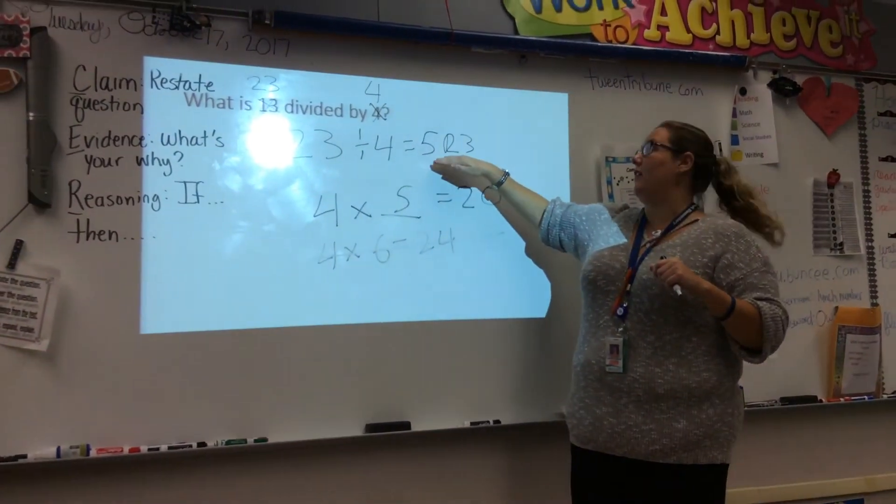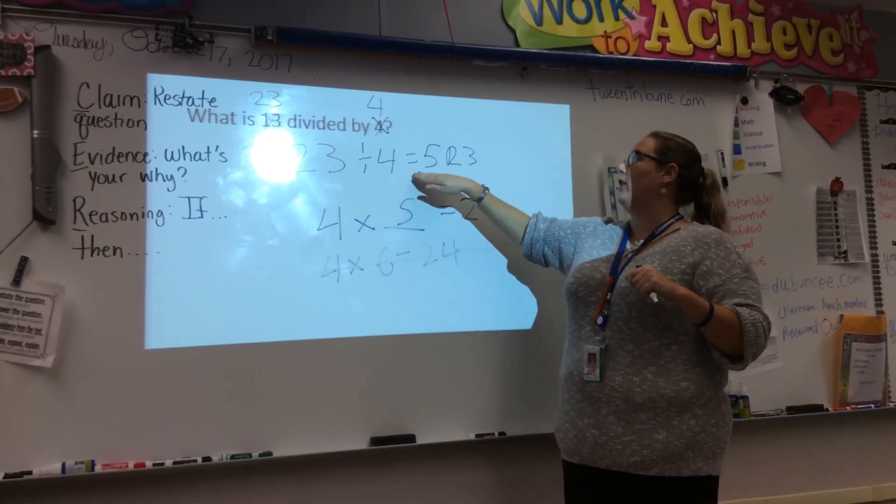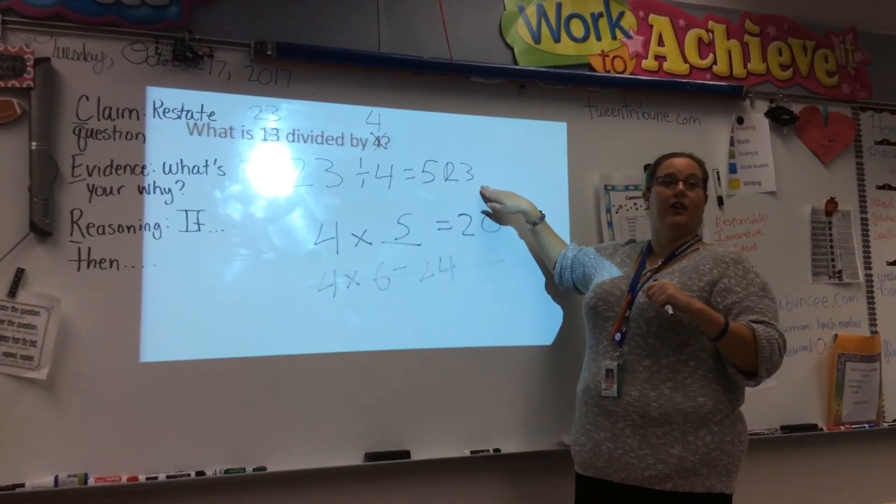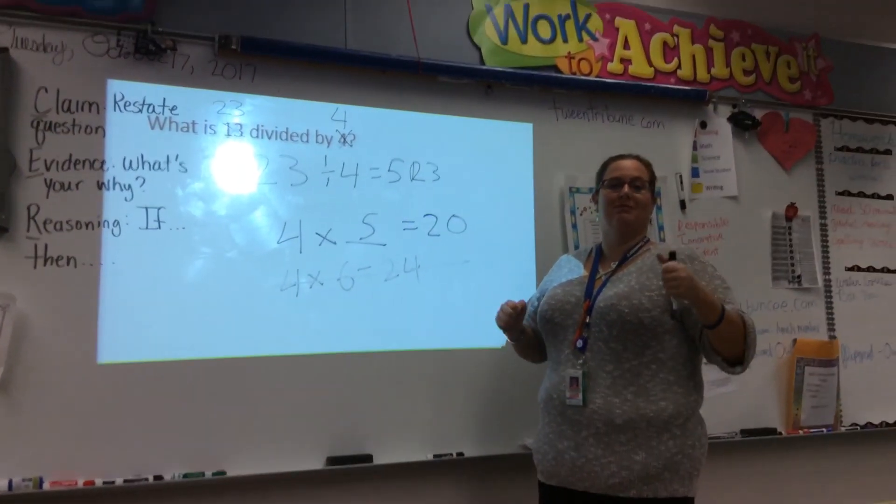So my answer works out. 23 divided by 4 equals 5 remainder 3. Capisce?